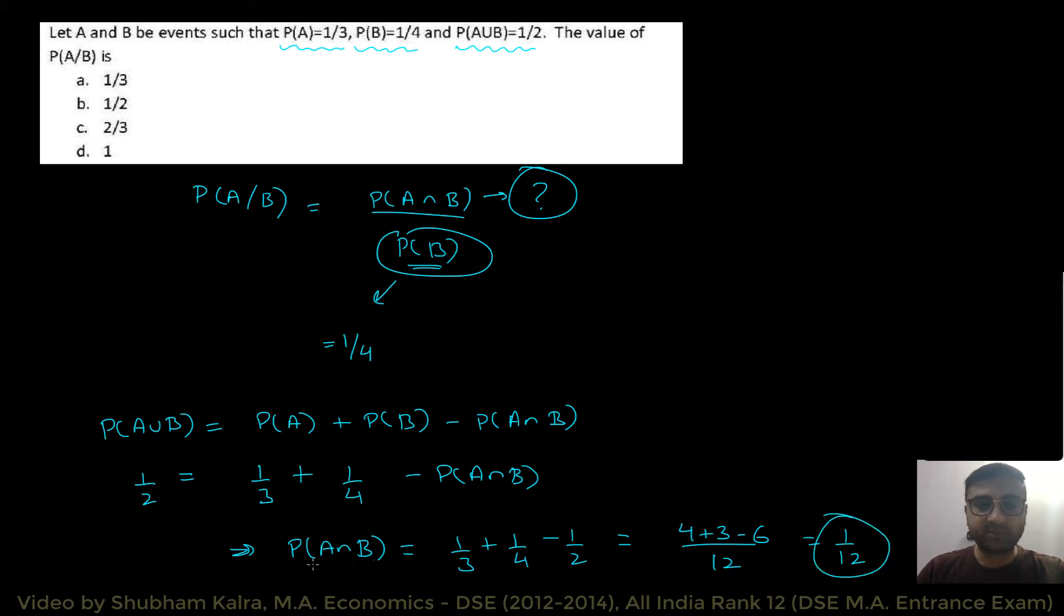Okay. So, this is your probability of A intersection B. And, then, this implies that probability of A given B is 1 divided by 12, and this is divided by 1 divided by 4. So, this is equal to 4 divided by 12, which is equal to 1 divided by 3. So, the right answer is option A. Let's move to the next question.